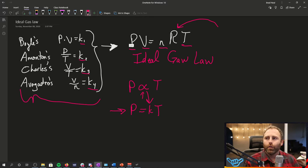And yeah, we can collect all of the constants into this new constant called R, which is going to be our gas constant. It's typically going to be in the value of 0.08206 liters times atmospheres over moles times Kelvin.